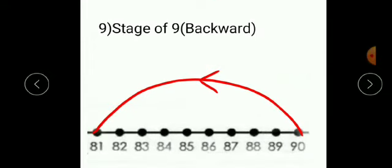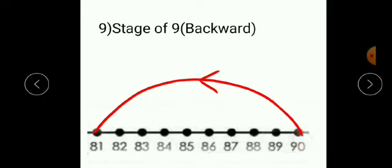Next is stage 9 backward. The method is the same. Draw a number line and write the numbers from 81 to 90. As it is a backward stage, start from the last number — 90. As it is stage of 9, move 9 numbers back: 1, 2, 3, 4, 5, 6, 7, 8, 9. Then draw a curve line and use the backward arrow to show the backward stage.